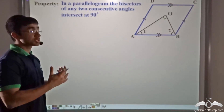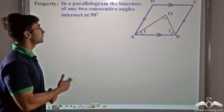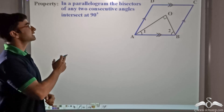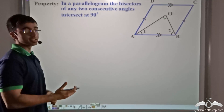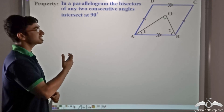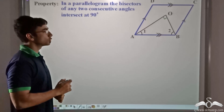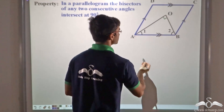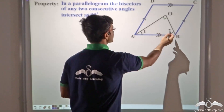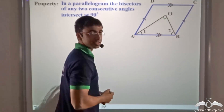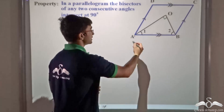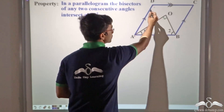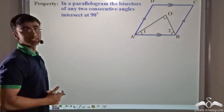The first property we discuss is that of a parallelogram. It states that in a parallelogram, the bisectors of any two consecutive angles intersect each other at 90 degrees. So if I consider the bisector of angle A and the bisector of angle B, these angular bisectors will intersect at 90 degrees. Similarly, if I consider angle A and angle D, their angular bisectors would also intersect at 90 degrees.